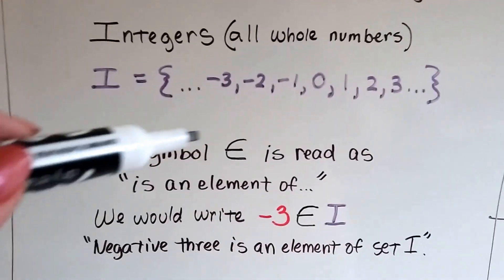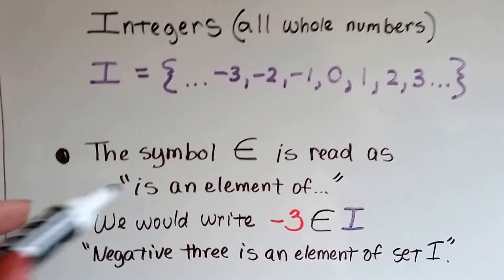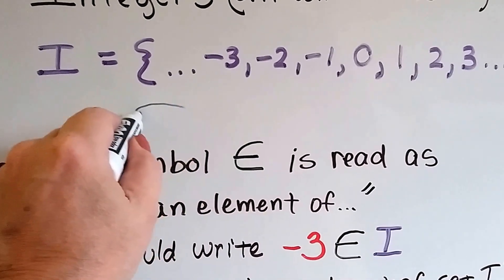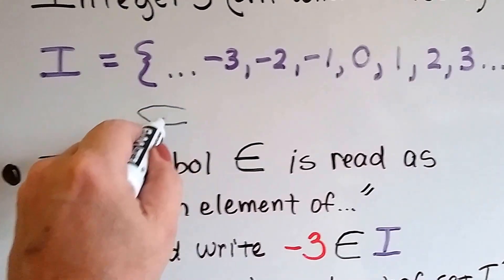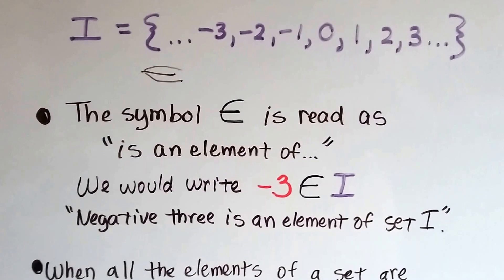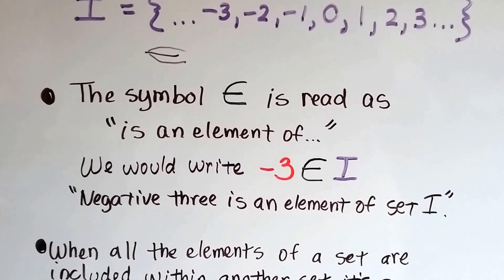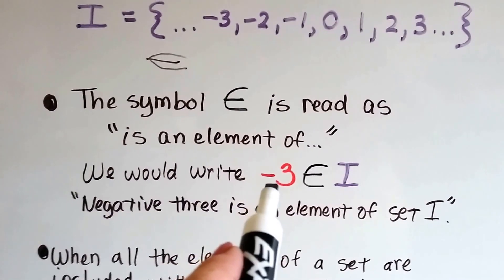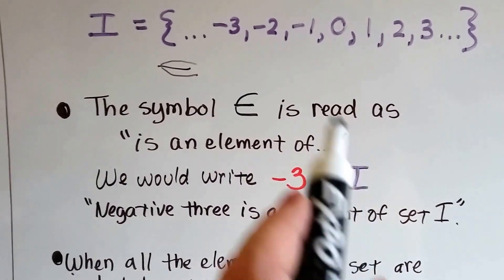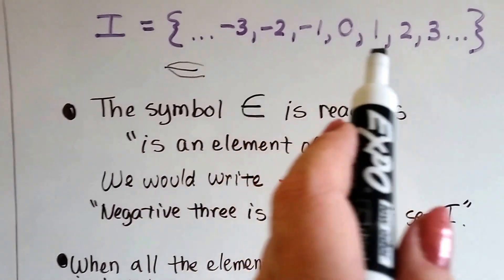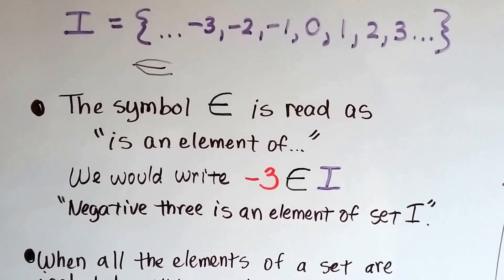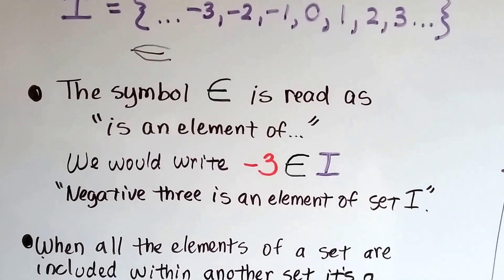The symbol — it's sort of like an E, but it's got more of a curve to it, and it's longer. That symbol is read as 'is an element of.' So we could write: negative 3 is an element of the set of integers, because it is. Negative 3 is an element of the set of integers.